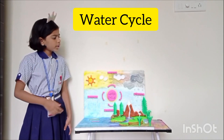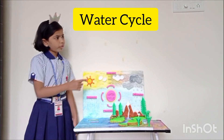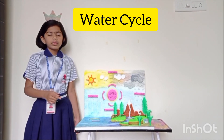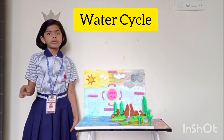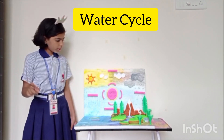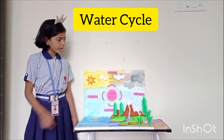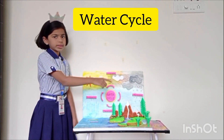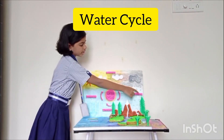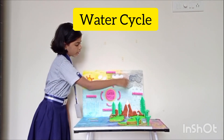When the clouds get heavier and heavier and cannot hold the droplets anymore, they will fall back to the earth in the form of rain, hail and snow. This is precipitation.